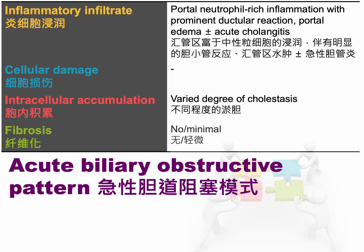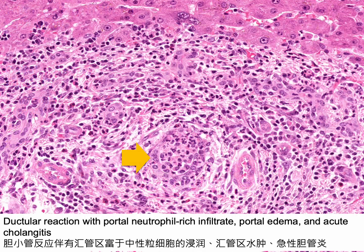The next type of cholestatic injury is the acute biliary obstructive pattern. This pattern is seldom observed in liver biopsies because it is typically diagnosed through imaging and cholangiogram. It is distinguished by a pronounced ductular reaction, portal inflammation rich in neutrophils, and portal edema. Acute cholangitis may also be present, characterized by the accumulation of neutrophils within a distended bile duct. The degree of lobular cholestasis can range from minimal to marked.